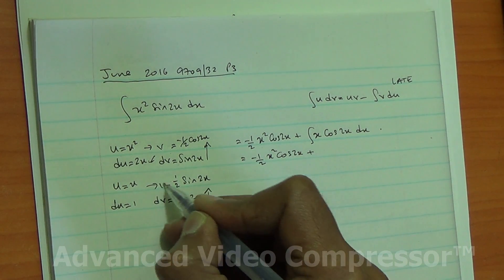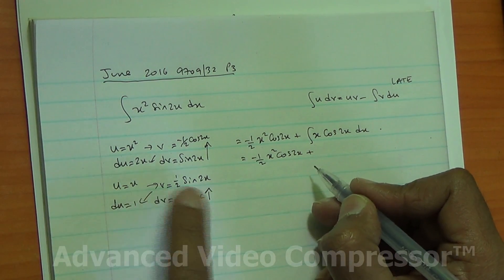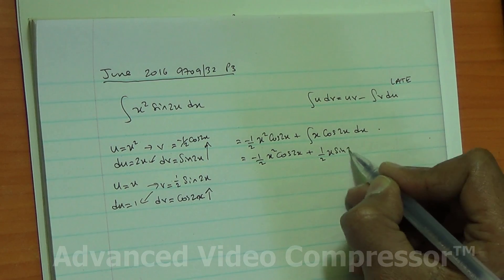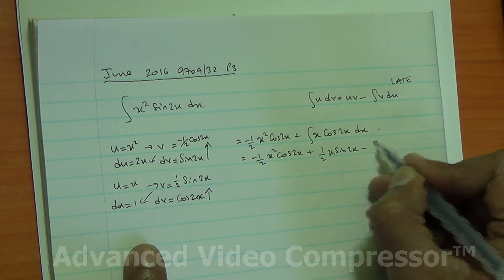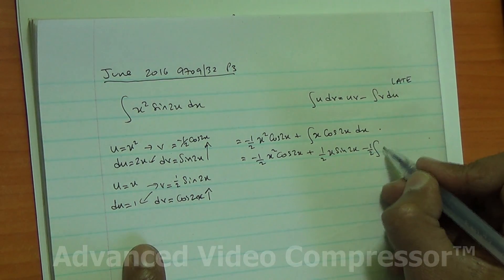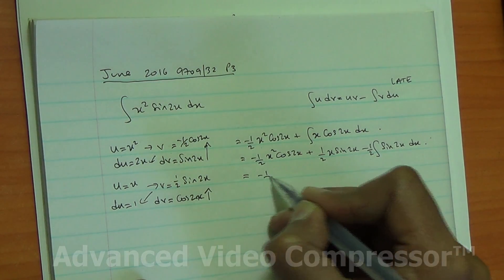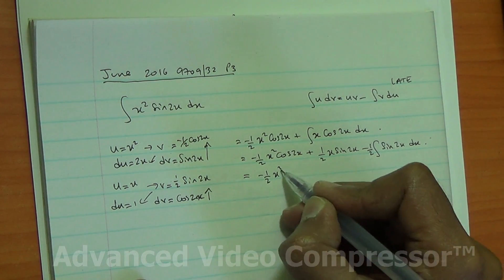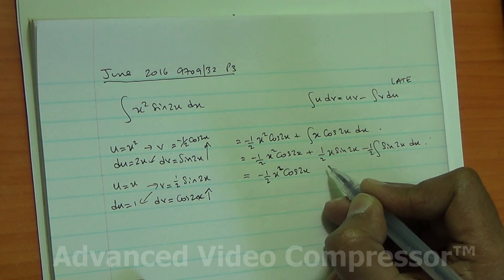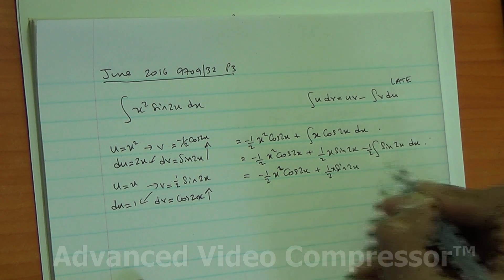uv minus integral of v du. So uv is x times this, so that's going to be half sin of 2x, minus the integral of v du, which is then half, half times this is the sin of 2x dx.